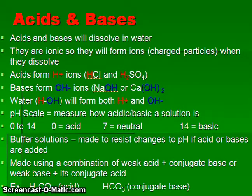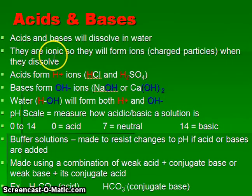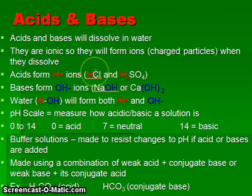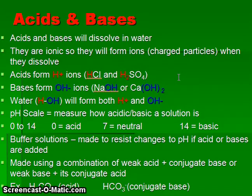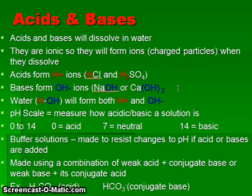Acids and bases are substances that dissolve in water and typically form ions. Acids form hydrogen ions (H+) — for example, HCl (hydrochloric acid) forms hydrogen and chloride ions, and H2SO4 (sulfuric acid) forms hydrogen and sulfate or bisulfate ions. Bases form hydroxide ions (OH−); sodium hydroxide (NaOH) and calcium hydroxide are two examples. Water is amphoteric, meaning it can behave as either an acid or a base because it can produce both hydrogen ions and hydroxide ions.